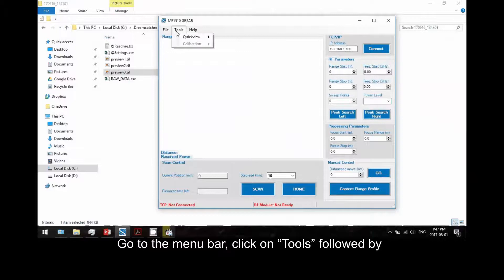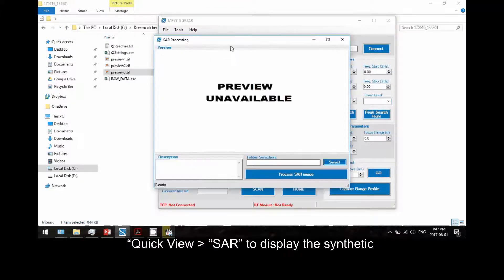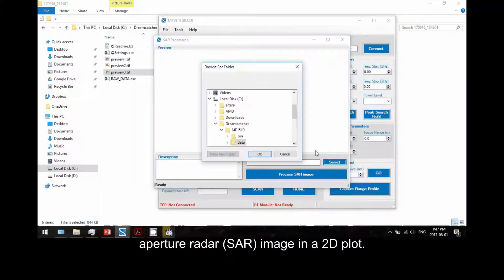Go to the menu bar, click on Tools followed by Quick View SAR, to display the synthetic aperture radar SAR image in a 2D plot.